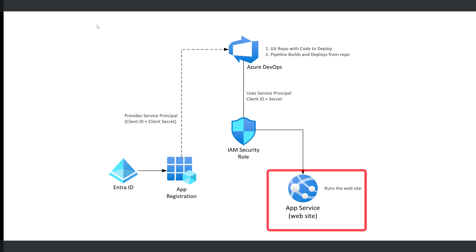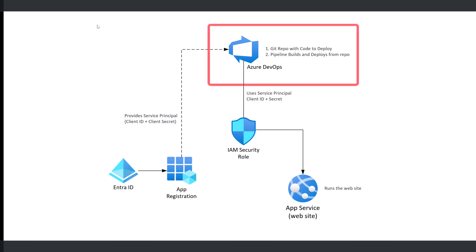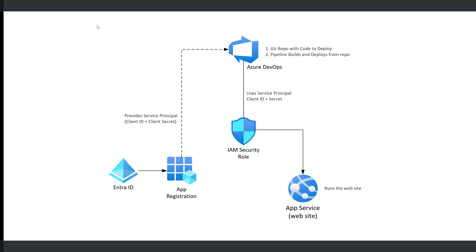We've already created a Python web app in Azure, but the Python app code hasn't been pushed to the app service yet. We also have a DevOps project already created, and we have a Git repo within the DevOps project called AIRef WebApp Streamlit. As the repo name suggests, the repo contains a Streamlit app that will be deployed into the web app. Both the DevOps.org and the Azure subscription are in the same Entra directory.